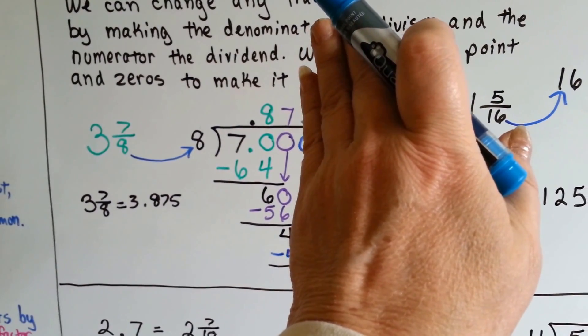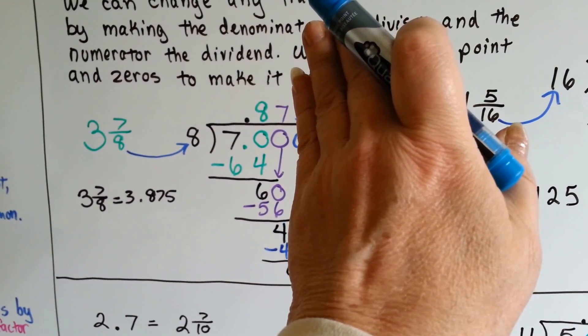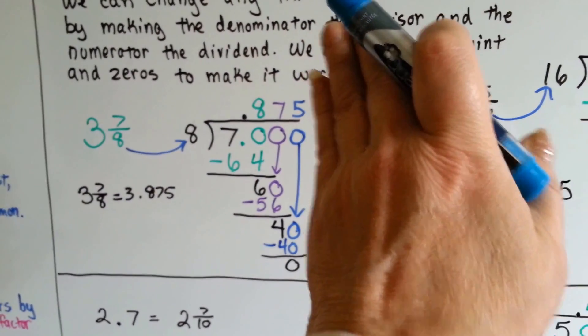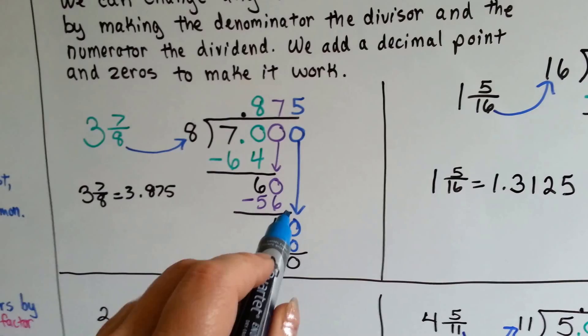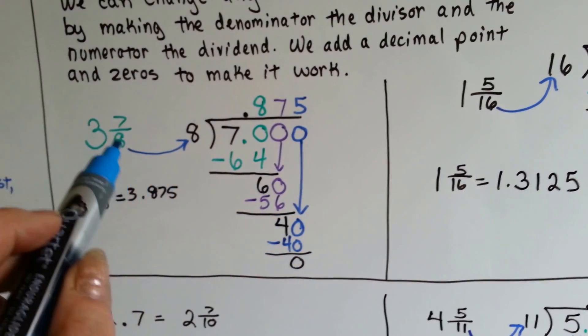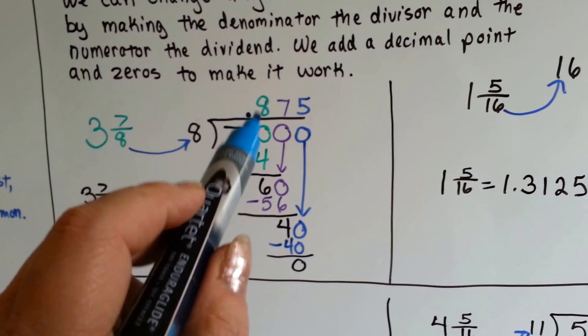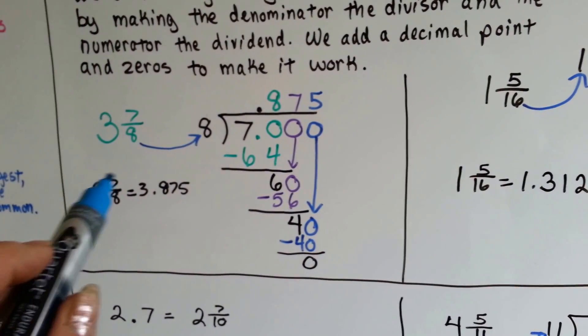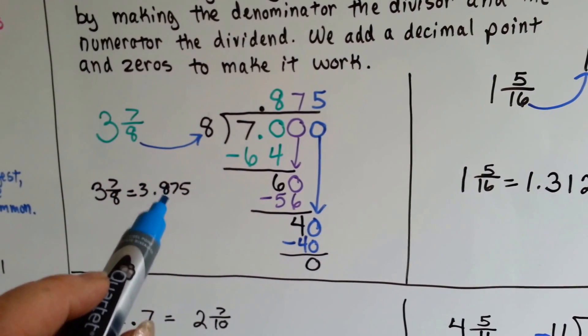8 goes into 60 seven times. 8 times 7 is 56. We do our subtraction and we get 4 and we drop another 0. 8 times 5 is 40. We do our multiplication and subtraction and get 0. And we have now turned 7/8 into .875. Now we tack our whole number back on and 3 and 7/8 becomes 3.875.